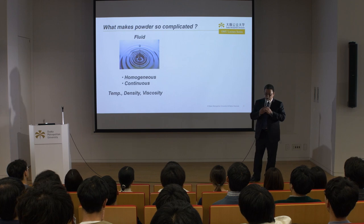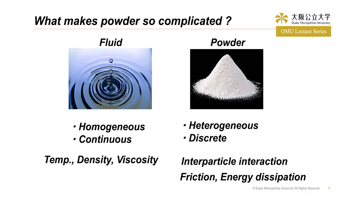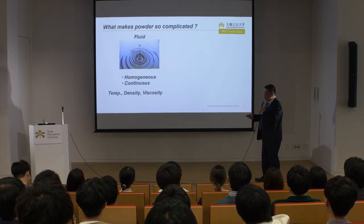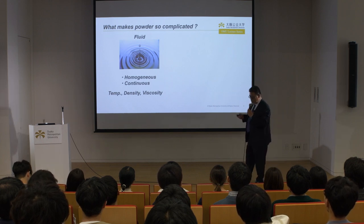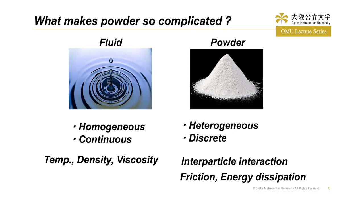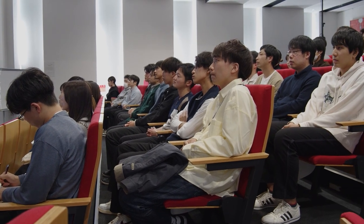The powder's behavior is very complicated. So I would like to discuss what makes powder so complicated. As you can see, this is a fluid. Fluid is homogeneous and continuous. The characteristics of fluid can be described by the parameters of temperature, density, and viscosity, and these parameters are easily measured using some sensors. This is a powder. Powder is heterogeneous and discrete. Discrete is very important — it means that each powder behaves independently. And also, between powders there is interaction such as friction and energy dissipation. These things make powder so complicated.